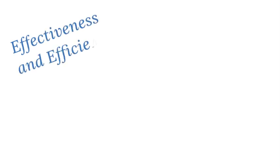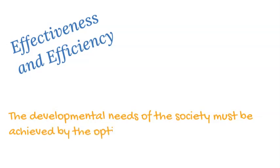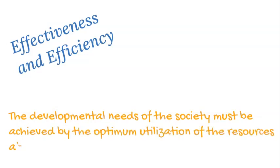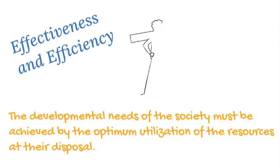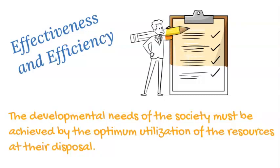Effectiveness and Efficiency. The developmental needs of the society must be achieved by the optimum utilization of the resources at their disposal. The concept of efficiency in the context of good governance also covers the sustainable use of natural resources and the protection of the environment.